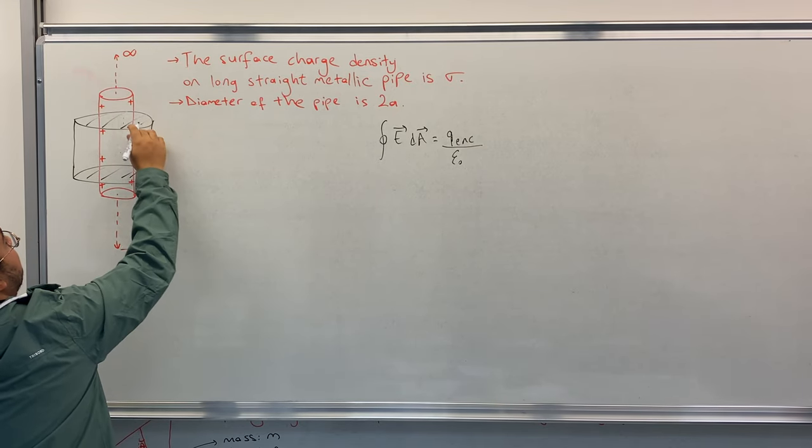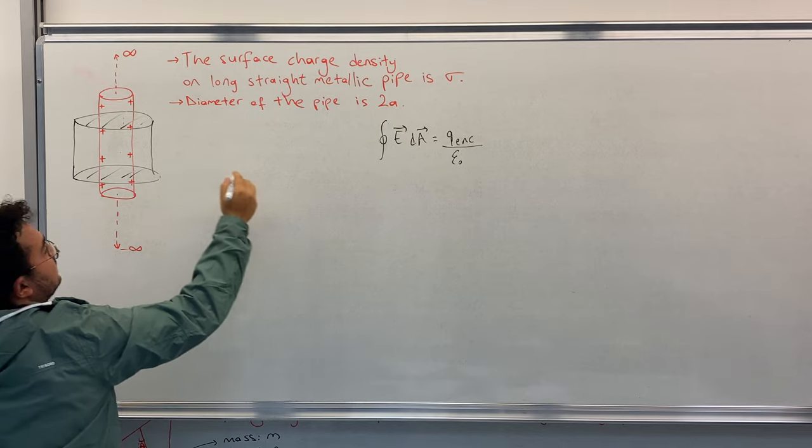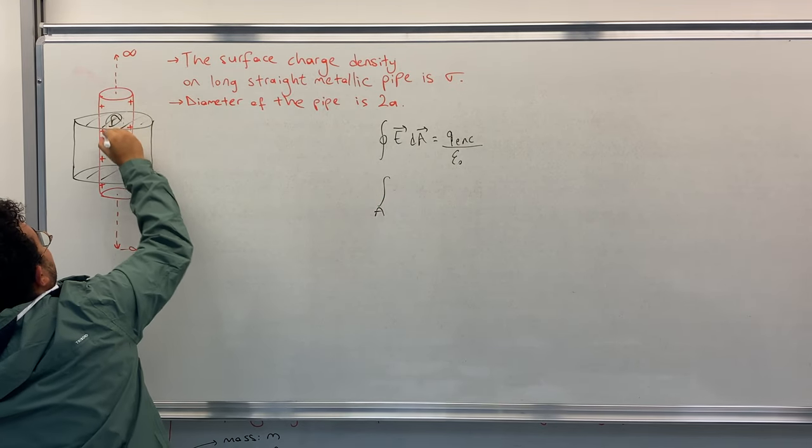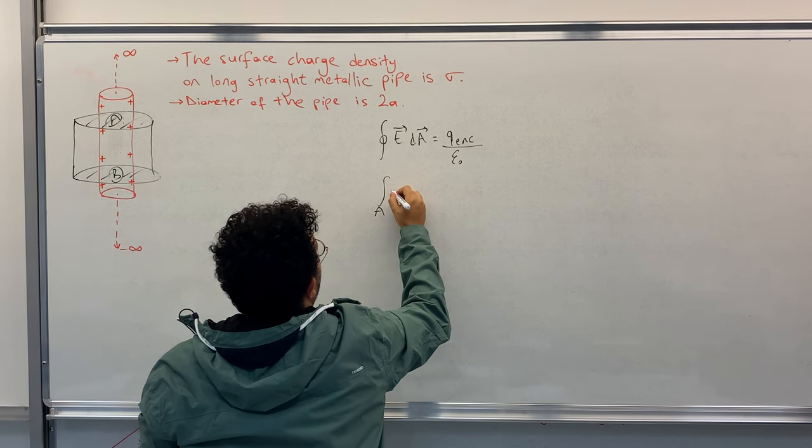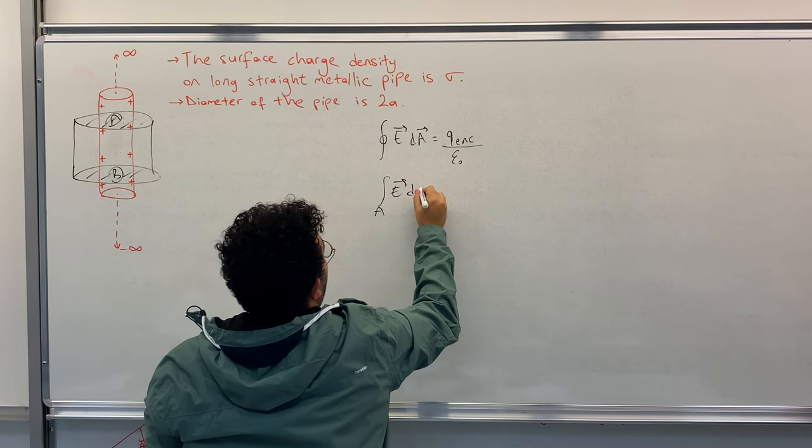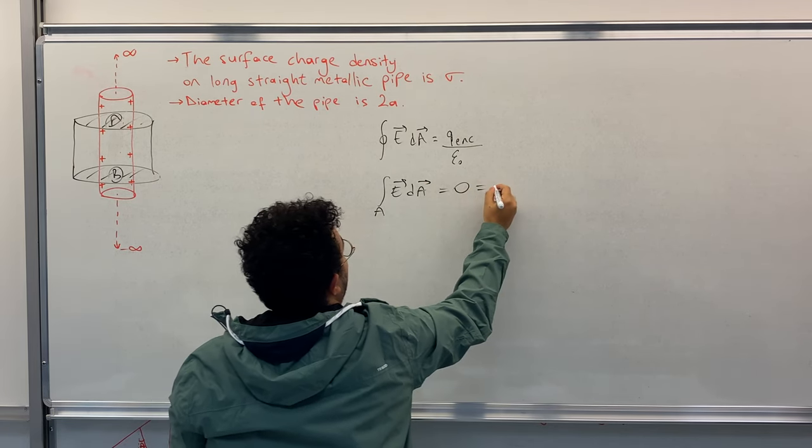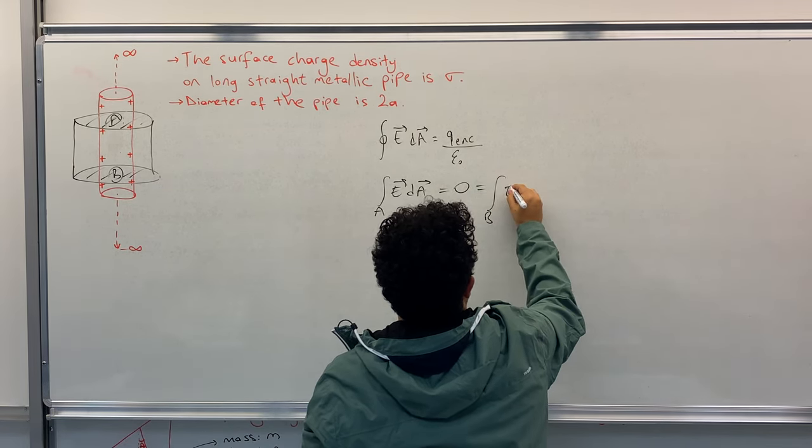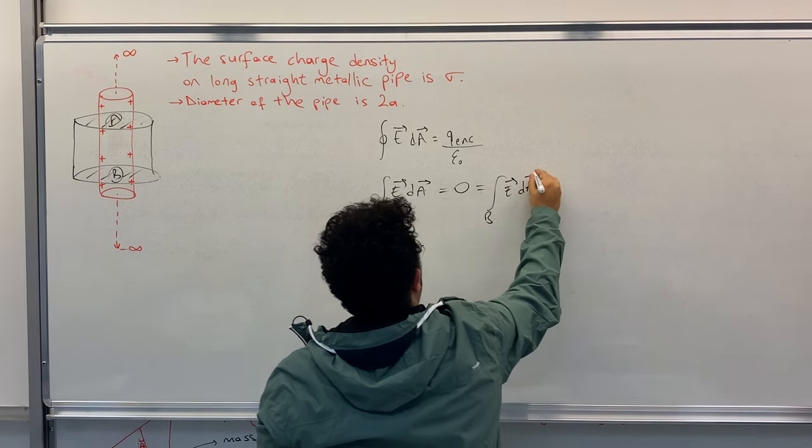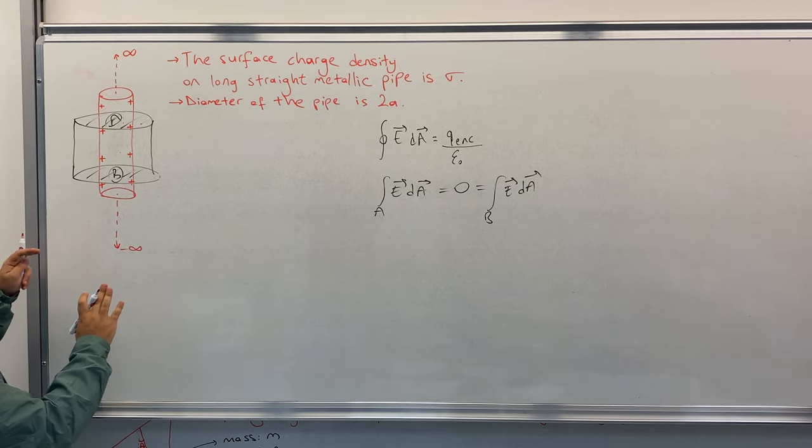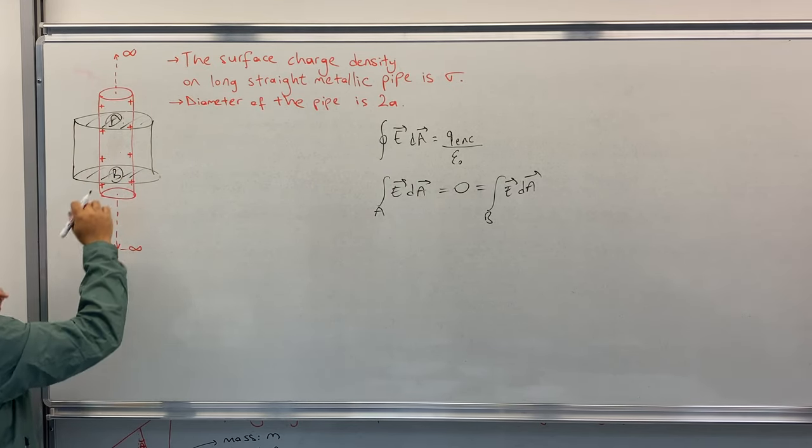And now we have for the closed volume, we need to integrate for all the surfaces. For the surface at the top and at the bottom, there is no electric flux. So integral over A and B, E·dA equals to zero. We will only consider the surface on the side.